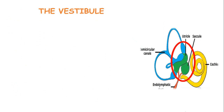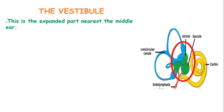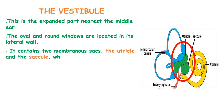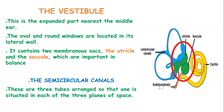The vestibule is the expanded part nearest to the middle ear. The oval and round windows are located in its lateral walls, and it contains two membranous sacs — the utricle and the saccule — which are important in balance. The semicircular canals are three tubes arranged so that one is situated in each of the three planes of space. They are continuous with the vestibule and also important in balance.